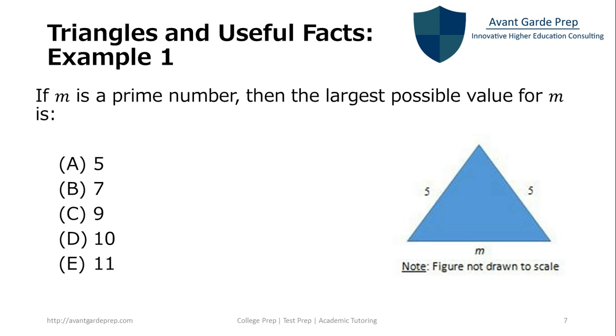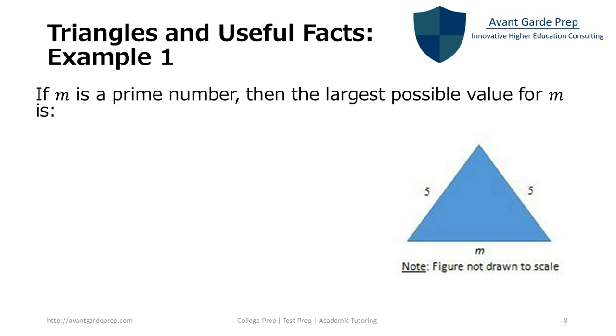Now let's look at our first example problem. Example 1 states: If m is a prime number, then the largest possible value for m is a) 5, b) 7, c) 9, d) 10, e) 11. You see the figure over there to the right. First we want to eliminate any obviously wrong answers. Here if you look, c and d, 9 and 10, they're both not prime numbers. So we can go ahead and eliminate them right away.